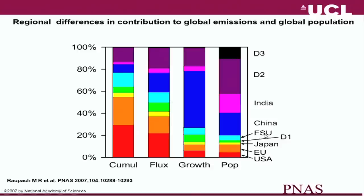The developed nations have contributed most to cumulative emissions, but much less to recent growth. It's the opposite for developing countries, particularly because of China's huge growth in recent emissions. The least developed countries have had virtually no contribution to climate change whatsoever. But these are the countries where population is growing fastest and where the need to reduce poverty is greatest. Yet the model for economic development is based on industrialisation and fossil fuel consumption, which releases carbon dioxide and disrupts the climate system.